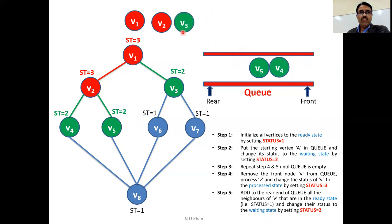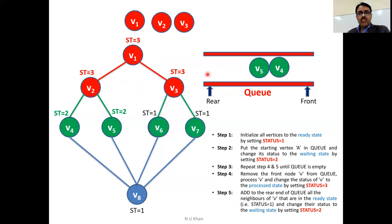Queue is not empty, so delete the front value — that is V3. We visit V3. So the order so far is V1, then V2, then V3 — the next generation nodes. Come to step five: add all the neighbors of V3 that are in the ready state. There are three neighbors: V1, V6, V7. V1 is already visited. So V6 and V7 are added with flag value 2.